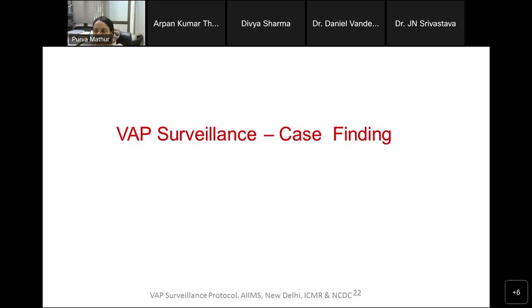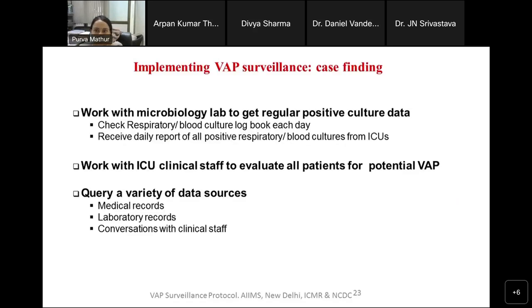How do you find the case? As with other device-associated infections, you work with the microbiology lab and check the respiratory registers and blood log books. Blood is important in VAP too, as there is often secondary bacteremia and a matching culture is helpful. Work with ICU staff because you need to discuss X-rays with clinicians. Query a variety of data sources: medical records, lab records, and conversations with clinical staff.